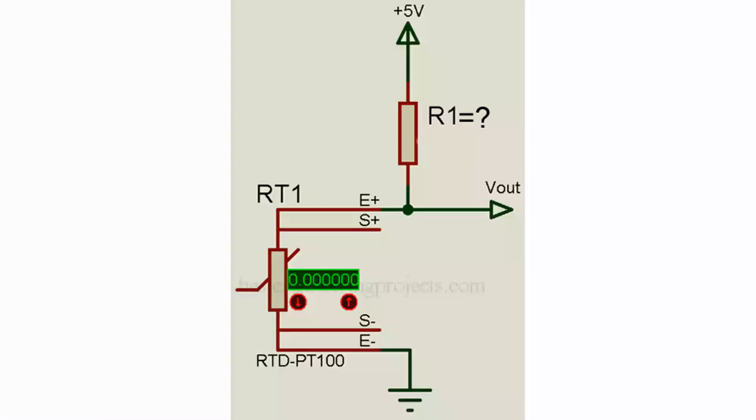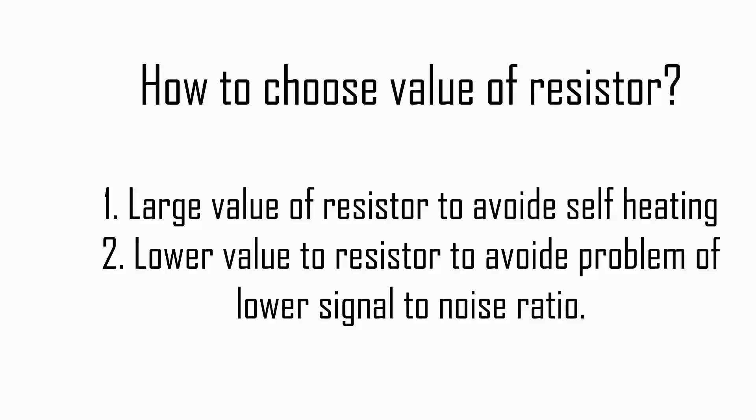Now a simple voltage divider network is designed using constant voltage source, a constant resistor and PT100. While choosing the value of this constant resistance R1, we have to consider few things. One, value of resistor R must be great enough in order to avoid the self-heating problem. If we use low value resistance, more voltage drops across PT100. As a result, more self-heating. This increases error.